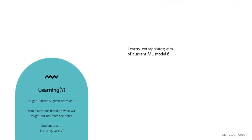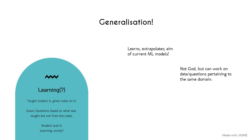Then we have the conventional type of learning, where the student extrapolates to answer questions. This is the aim of current ML models. It's not the omniscient kind we were optimistically hoping for in the previous example, but the student or machine can work on data or questions pertaining to the same domain. The student learns a set of concepts and is able to apply them to questions related to those concepts, with a great amount of accuracy.